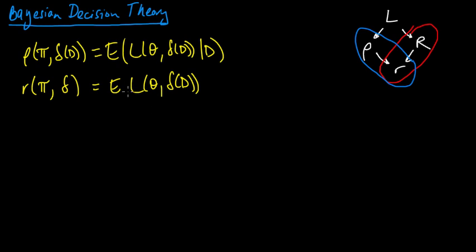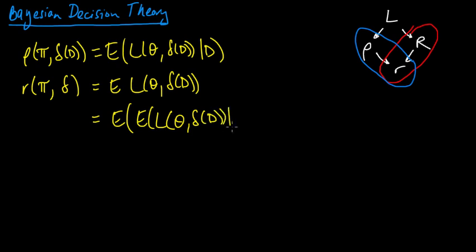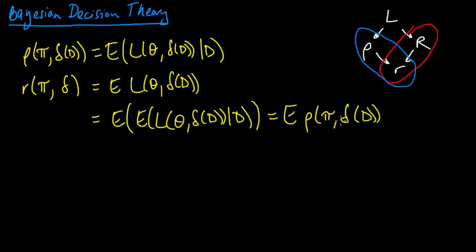Let's play around with this a little bit. We can always rewrite the Bayes risk using the law of conditional expectations. This is the expected value of the loss given the data. What is this thing in the middle? This is just the Bayesian expected loss — rho. So this is the expected value of rho of pi with delta of d. It's just the expected value of our Bayesian expected loss.